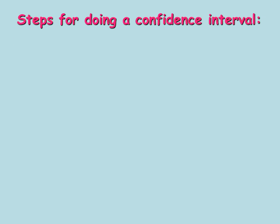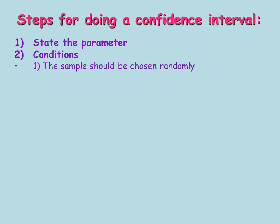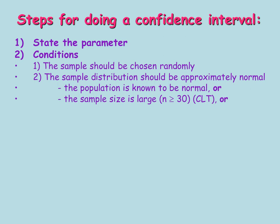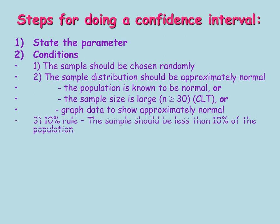As before, we have to go through our steps. The very first thing we're supposed to do is state what the parameter is, so we define it. Since there should be only one parameter in Chapter 23, we'll state that one parameter. There are conditions, like before: the sample should be chosen randomly; the sample distribution should be approximately normal — either the population is known to be normal, the sample size is large enough meaning n ≥ 30, or when we look at the data it's shown to be approximately normal. Lastly, we look at our 10% rule: the sample should be less than 10% of the population.